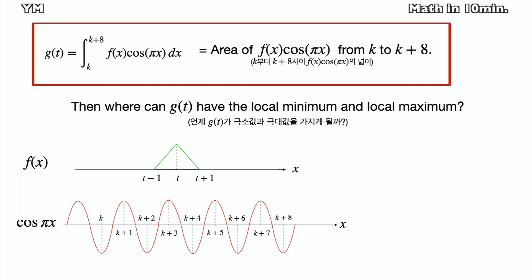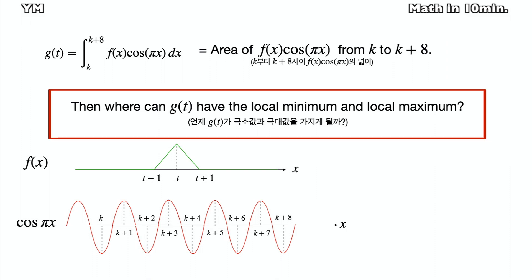Again, gt could be told as the area of multiples of fx and cosine pi x between x equals k and x equals k plus 8. Then where can gt have local maximum and local minimum?